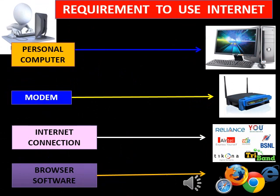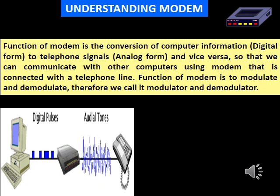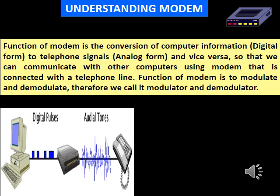There are four basic requirements to use the internet: a personal computer, a modem, an internet connection, and browser software. Browser software is an application you install in your system to access the internet — for example, Mozilla Firefox, Google Chrome, Internet Explorer, and so on. A modem is used for converting computer information from digital form to analog form and vice versa, so that information can travel through telephone lines. The main function of a modem is to modulate and demodulate signals; therefore, modems are also known as modulators and demodulators.